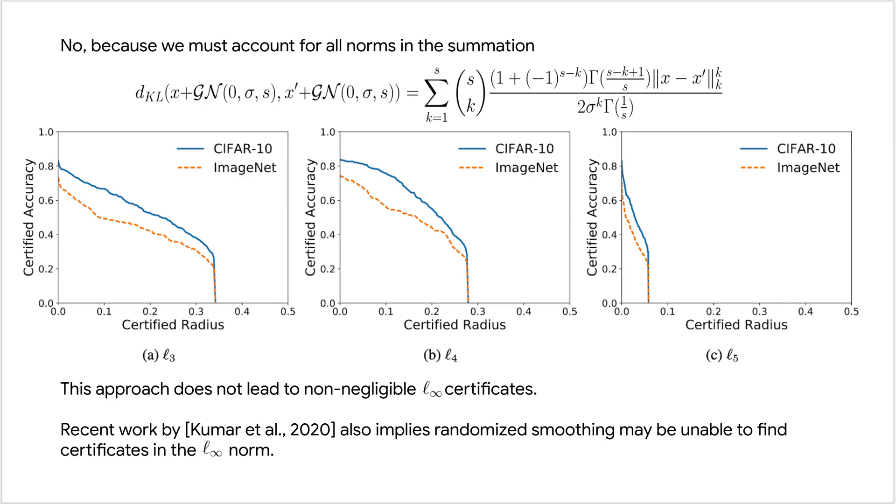This is what we show here in these three plots. What we plot is the certified accuracy, which is the fraction of the test set for both CIFAR and ImageNet that can be certified as robust for a given amount of noise. For the L3 norm, we can certify approximately 40% of both the ImageNet and CIFAR test set for L3 norms of around 0.3. For L4, this drops to below 0.3, and for L5, this drops to well below 0.1. So as the LP norm increases that we want to certify robustness in, the certificates become weaker and weaker.